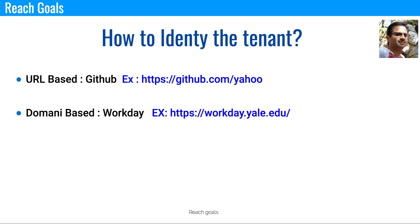The second method is domain-based identification. In an application like Workday, you might see something like https://workday.a.edu, where the university is identified by the full domain name. Once the domain URL is identified, a tenant ID can be generated in the backend for that specific domain, and that tenant ID can be used for any future references to serve the different needs of the tenant.